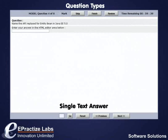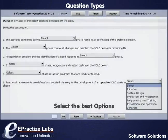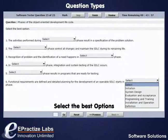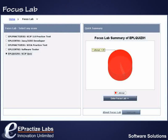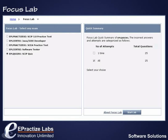Single Text Answer — type the answer in the text field provided. Select the Best Option — select the correct item from the list of items given in a combo box. Focus Lab stores all the wrongly answered questions in every lab and classifies the questions based on the number of attempts.